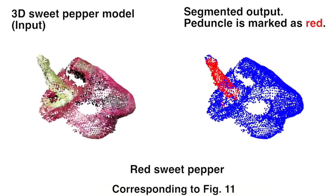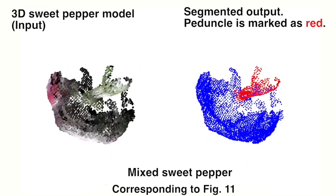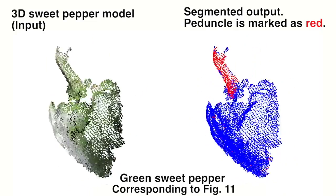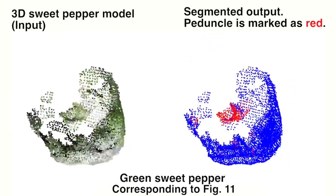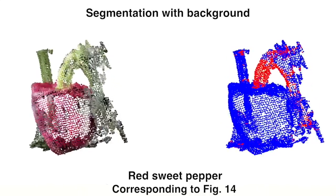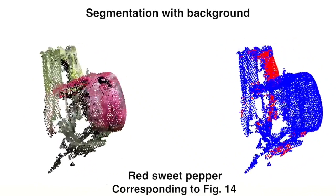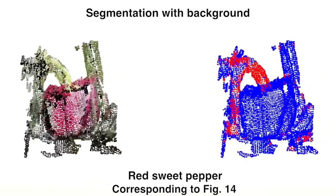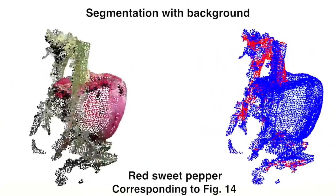The left shows 3D sweet pepper model inputs to our classifier and the right is the segmented output. The peduncle is highlighted in red, and blue indicates the non-peduncle class. In these experiments, we remove complex background and leaves. In the next experiments conducted in the presence of complex background, for the red capsicum the peduncle is correctly detected, but the trained model yields false positives for other stems and leaves that exhibit similar color and shape to the peduncle.